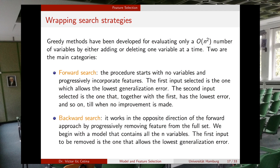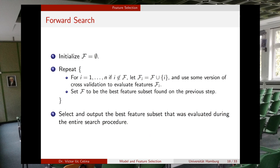As an algorithm, forward search initializes the feature set F as the empty set. Then you add one feature at a time — index i runs from one to n where n is the number of features. If feature i is not in the set F, you create a new set as the union of the current set F and that feature.